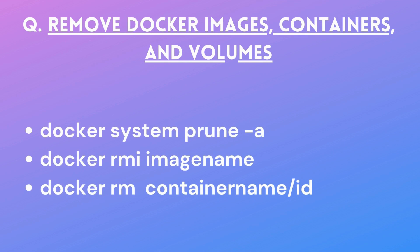I was asked how to remove Docker images, containers, and volumes. There are two approaches. Running `docker system prune` removes dangling images and containers not in use. Adding the `-a` flag — `docker system prune -a` — removes everything, whether in use or not. For specific removal: use `docker rmi <image_name>` to remove an image. To remove a container, first stop it with `docker stop <container_id>`, then delete it with `docker rm <container_name_or_id>`.